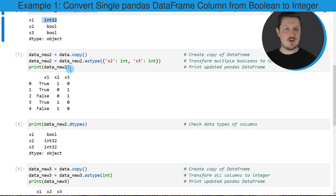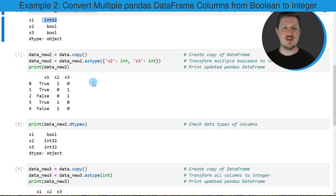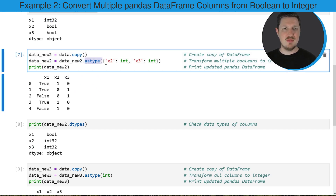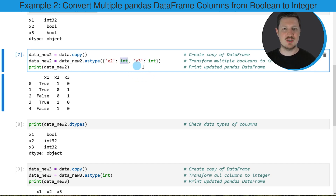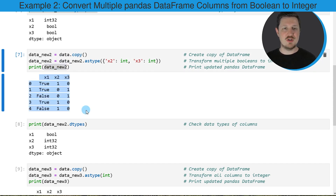In the next example, in the seventh code box, I want to show you how to convert multiple columns to the integer data type. For this, we have to specify multiple columns within the astype function. In this case, I want to convert the columns X2 and X3, and both of these columns should be converted to the integer data type. So after running these lines of code, another DataFrame has been created called data_new_2. This DataFrame contains the three columns X1, X2, and X3, and the first column still has the boolean data type, but the columns X2 and X3 have been converted to the integer data type.